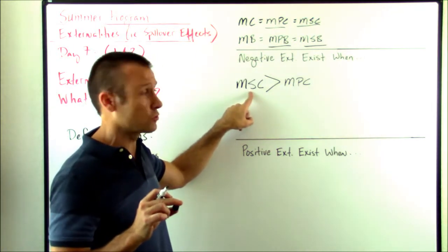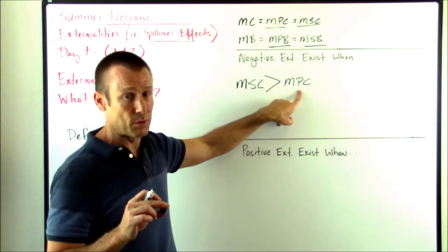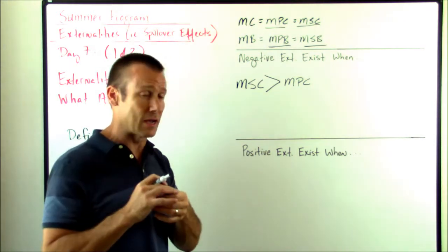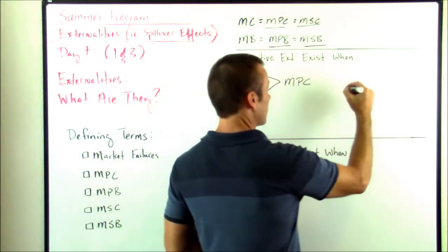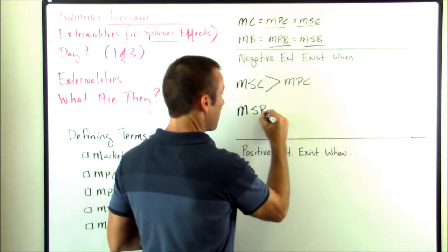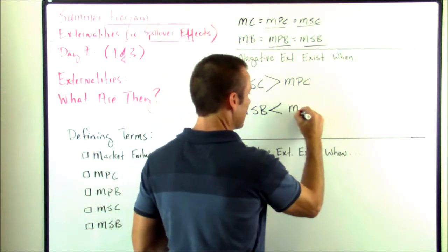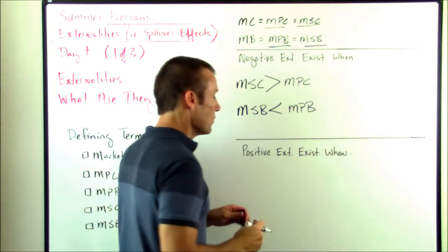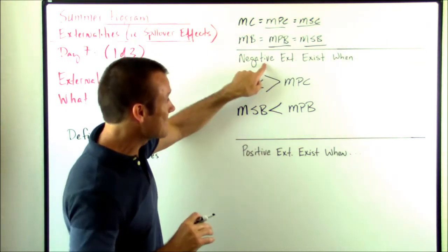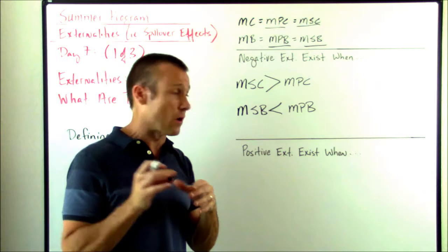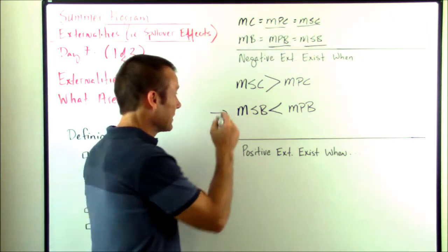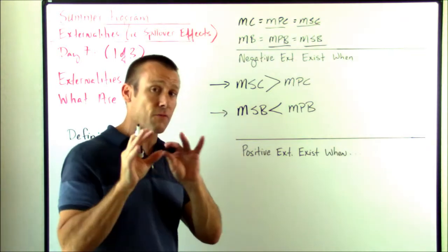On the consumption side, a negative externality exists when the marginal social benefit is less than the marginal private benefit. The marginal social benefit includes the marginal private benefit, but this is a negative externality from consumption — when the consumption of the good creates the spillover effect. The production-side case was a negative externality from production, where the production of the good created the spillover effect.